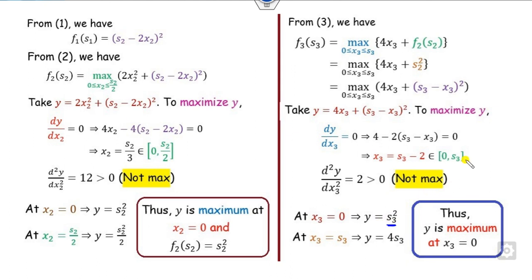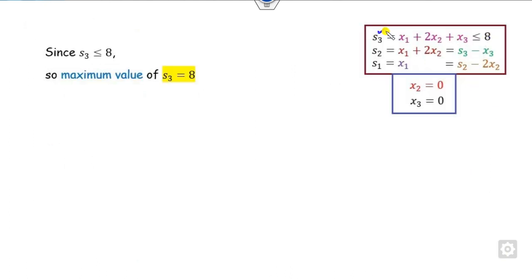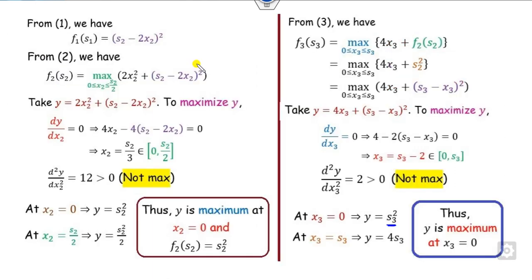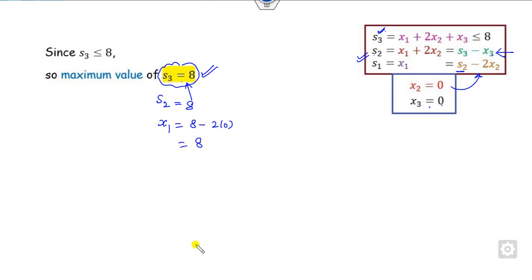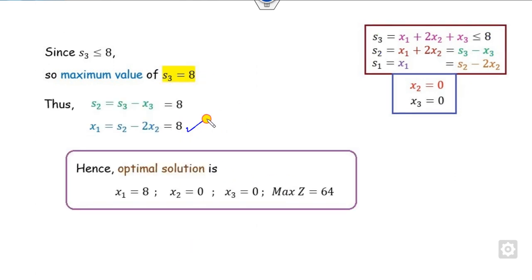The maximum occurs at a boundary. Since this is a maximization problem, s3 = 8. Substituting s3 = 8, the values are 64 and 32 — so 64 is the maximum. Therefore x2 = 0, x3 = 0. Substituting s3 = 8 and x3 = 0 gives s2 = 8. Substituting s2 = 8 into x1 = s2 minus 2×0 gives x1 = 8. The answer is x1 = 8, x2 = 0, x3 = 0, and maximum z = 64.